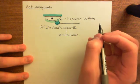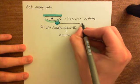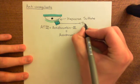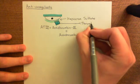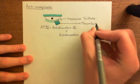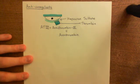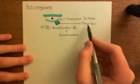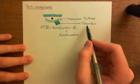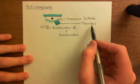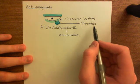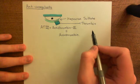Thrombin is arguably the most important coagulation factor. It's right at the end of the coagulation cascade. Both the intrinsic and extrinsic coagulation cascades lead to the activation of thrombin, which then converts fibrinogen into fibrin. Fibrin is then converted into fibrin strands by factor 13a. So thrombin — also called factor 2a — once activated, converts fibrinogen (factor 1) into fibrin (factor 1a), and also activates factor 13 into factor 13a, which assembles fibrin into fibrin strands.